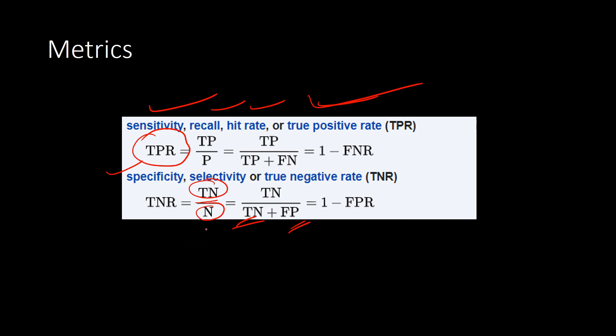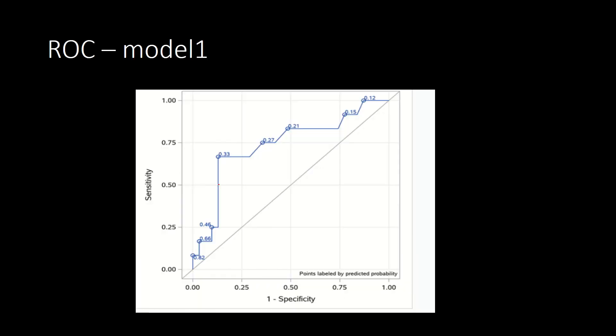Here is the ROC curve for a given model. In the X-axis you have 1 minus specificity and in the Y-axis you have sensitivity. The ROC curve is normally always in the upper side of this 45-degree line to the X-axis.